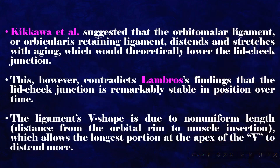Kikawa et al. suggested that the orbitomalar ligament, or orbicularis retaining ligament, distends and stretches with aging, which would theoretically lower the lid-cheek junction. However, this contradicts Lambros's findings that the lid-cheek junction is remarkably stable in position over time. The ligament's V-shape is due to non-uniform length — the distance from the orbital rim to muscle insertion — which allows the longest portion at the apex of the V to distend more.